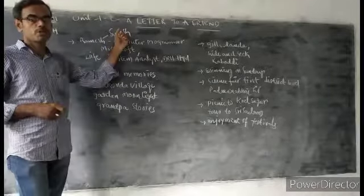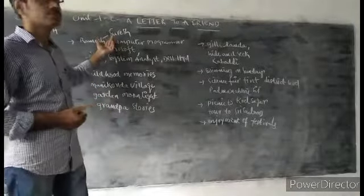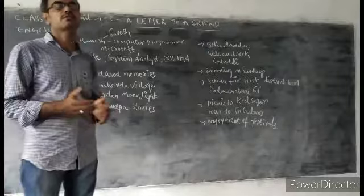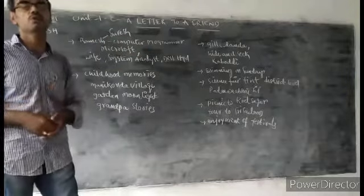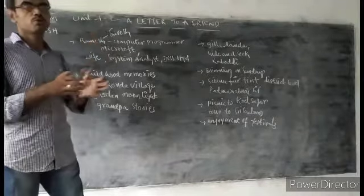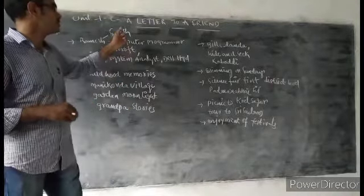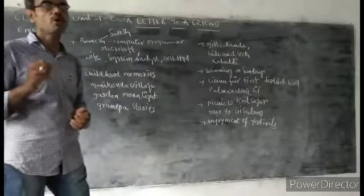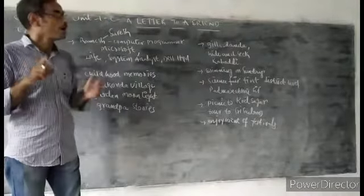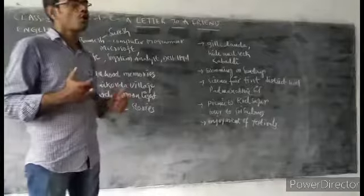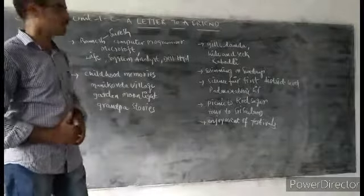Ramesh is writing a letter to Suresh, remembering his olden days, that is his childhood days. Both are very good friends in childhood. After getting older, they settled somewhere. Ramesh working in Hyderabad, whereas Suresh is in his village only. One day Ramesh came to his village but he did not have a chance to meet Suresh, his friend. Now he is apologizing to Suresh that he had no chance to meet him. In this letter, particularly, he is remembering his childhood memories.